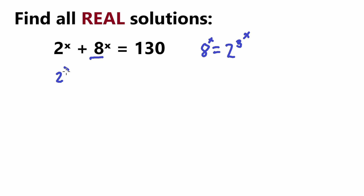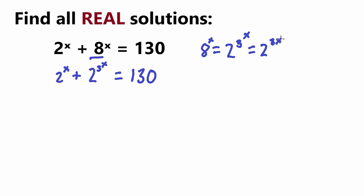So our equation becomes 2^x plus 2^(3x) equals 130. There is a rule that when you have an exponent raised to another exponent, you can multiply the two exponents together — so 2^(3x) equals (2^x)^3. I'm going to rewrite 2^(3x) as (2^x)^3, and I'll show you why that's useful.